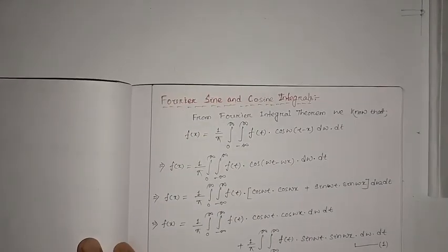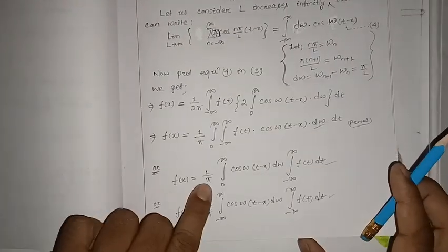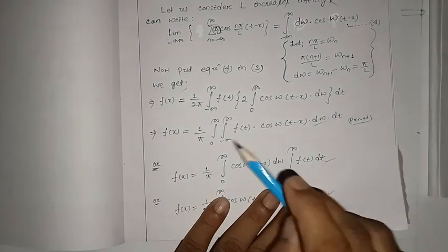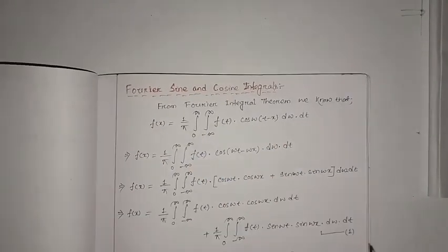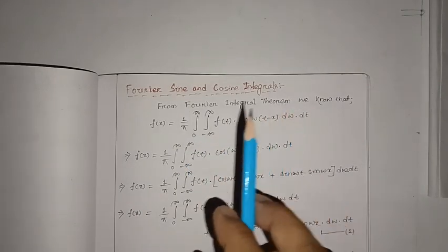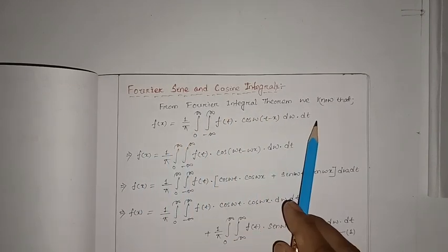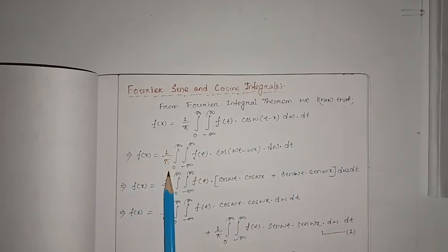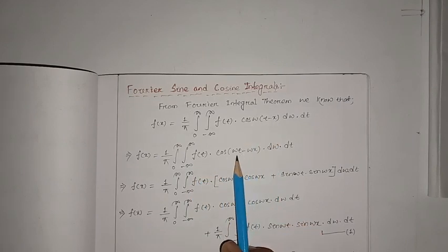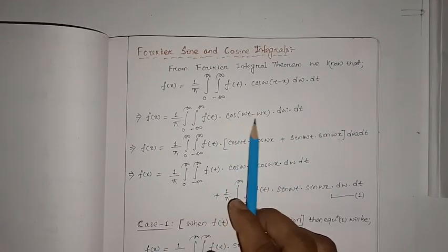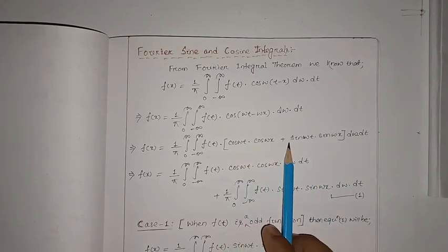From the Fourier integral theorem, we know that f(x) can be written as one by pi, integral zero to infinity, integral minus infinity to plus infinity, f(t) cos(ωt - x) dω dt. Now cos(ωt - x) can be expanded using cos(a - b) = cos(a)cos(b) + sin(a)sin(b), giving us cos(ωt)cos(ωx) plus sin(ωt)sin(ωx).